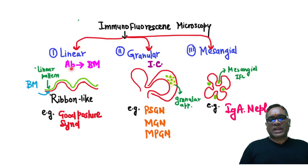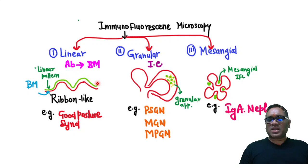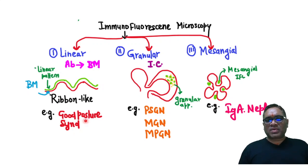Linear pattern — when antibodies are damaging the basement membrane, you are going to see linear, homogenous green immunofluorescence running parallel to the basement membrane. This will be described as a linear ribbon-like pattern of immunofluorescence, and the example will be Goodpasture syndrome.